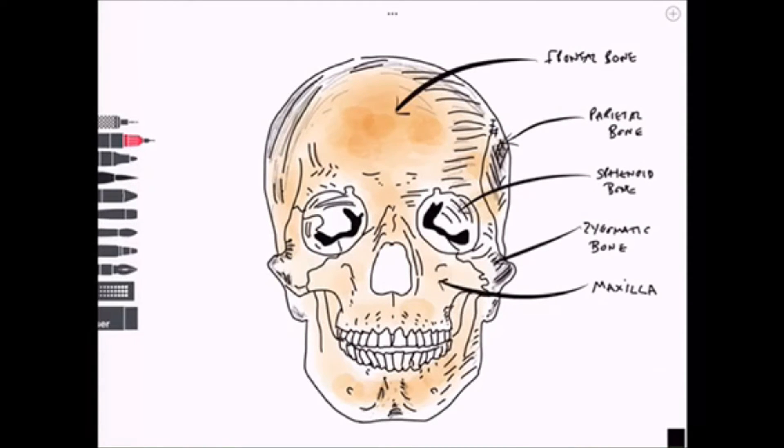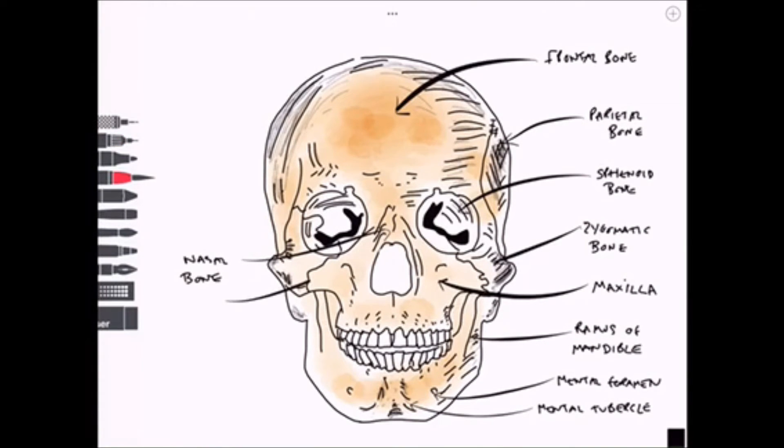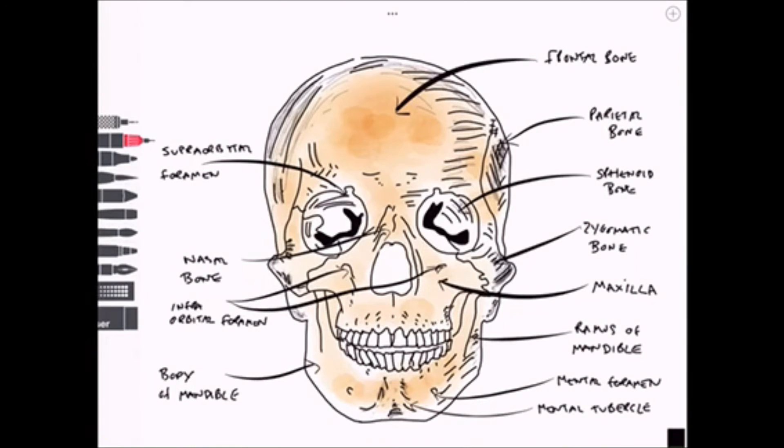We have the ramus of the mandible and we also can see the mental foramen again. We can now see the mental tubercle and the protuberance which make up the size and shape of the chin. We can also see the nasal bone. On this view we get a glimpse of some holes in the skull called the infraorbital foramen where the maxillary nerve would pass through for sensory innervation. Likewise we would get trigeminal nerves passing through the supraorbital foramen which is just above the orbit.